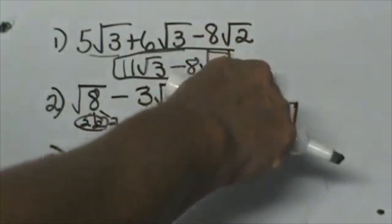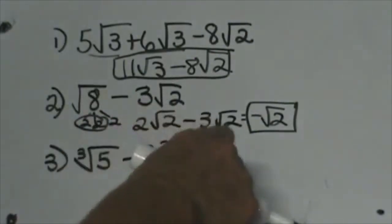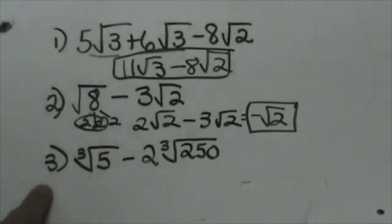Sometimes they are already simplified like the first one, but other times you have to simplify the radical first and then combine. Let's look at one more.